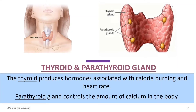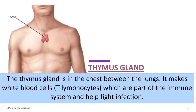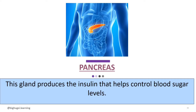The thyroid and parathyroid gland. The thyroid produces hormones associated with calorie burning and heart rate, which involves metabolism. The parathyroid produces hormones that control the calcium levels of your body and normalizes bone. The hormone involved here is parathyroid hormone. Next is the thymus. The thymus gland is in the chest between the lungs. It makes white blood cells, or T-lymphocytes, which are part of the immune system to help fight infection. They are produced before puberty. Next is the pancreas. This gland produces insulin that helps control blood sugar levels. It is located behind the stomach.